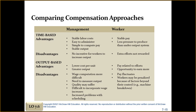For output-based compensation, an advantage for employees is that pay is related to effort — if they maximize output, their pay reflects that effort. A disadvantage is that pay fluctuates. If one day you feel good and produce 800 items you expect more pay, but if the next day you only produce 400, you won't make as much — your pay fluctuates based on your output.